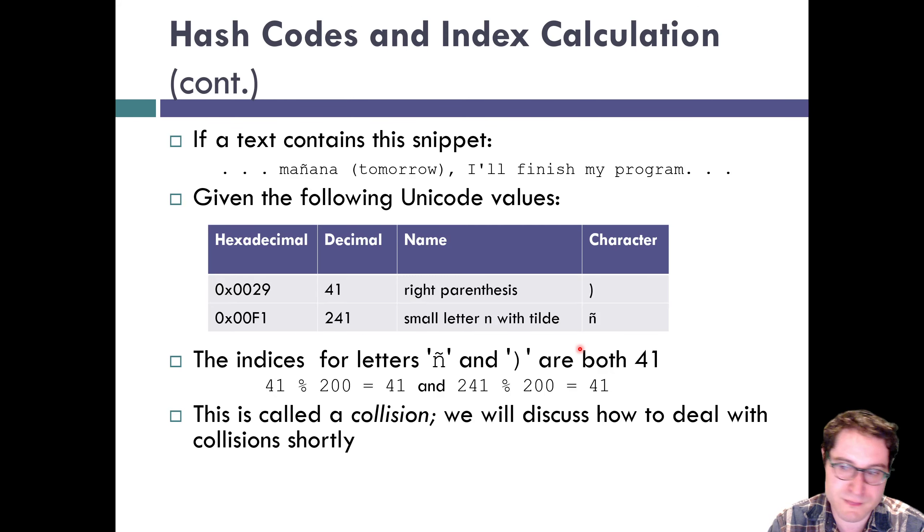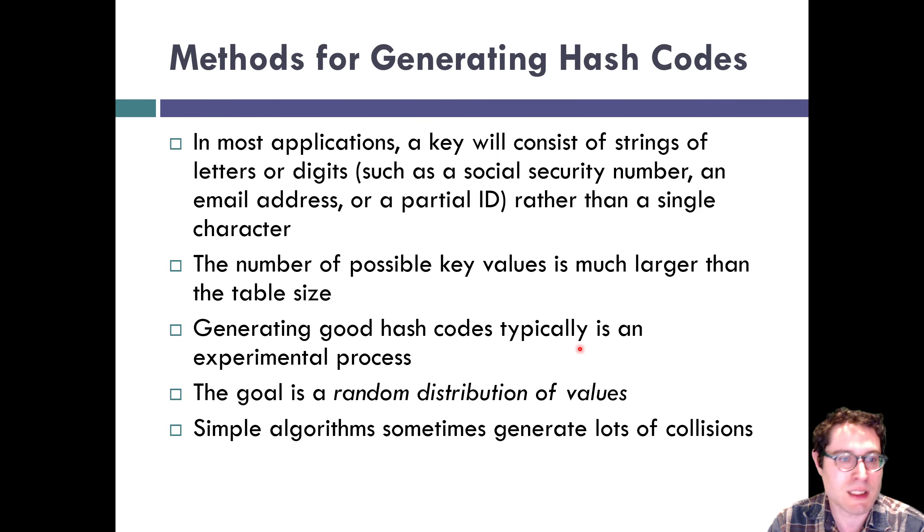The only issue we have left is something called collisions—what if we want to map two things to the same location? So how do we get a hash code? That will be in our next video.